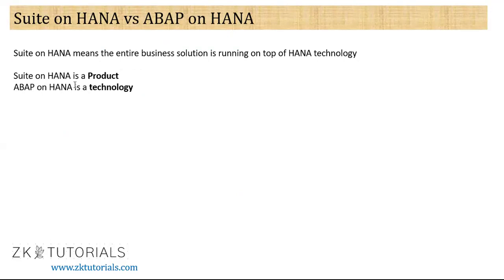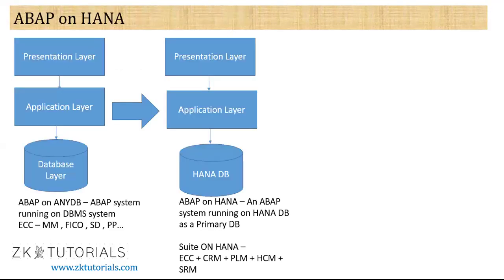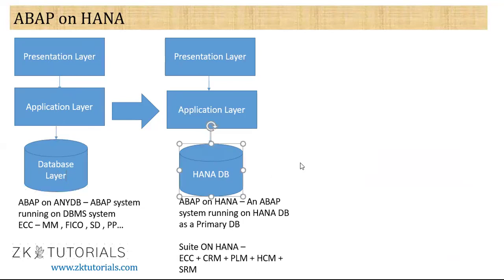In continuation of the last lecture we will continue from here. So this is our architecture. Before HANA, the database could be anything — Oracle, DB2, or any database. But after that, SAP changed completely to the HANA database, which is an in-memory, high-performance database. It can store data in column store.